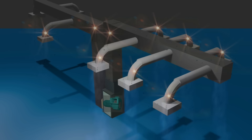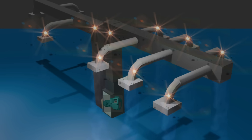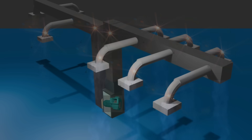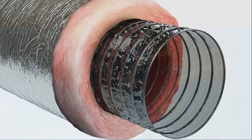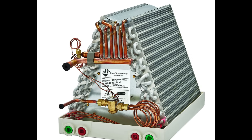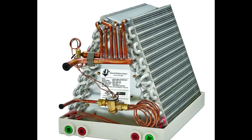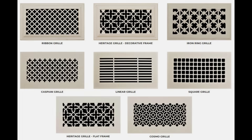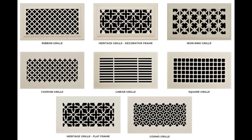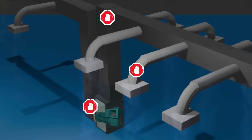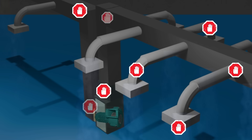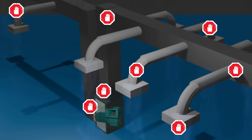Every bend in ductwork is a change in direction the air is forced to take — that's resistance. The spiral lining inside flex duct creates drag — that's also resistance. The air filter, the tightly packed fins of even a clean evaporator coil, even the supply and return grills on the wall or ceiling — these are all obstacles the blower has to work against to constantly move the volume of air required to take command of the space we're trying to condition.